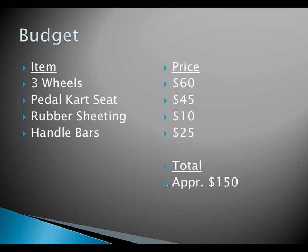On the budget, we cross-referenced various systems in research. Three wheels would be $60, the pedal car seat would be $45, the rubber shading would be $10, and handles would be $20. We sourced from different websites — Amazon, eBay, different bicycle websites, etc.